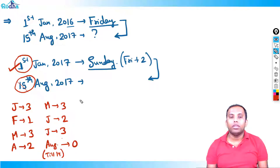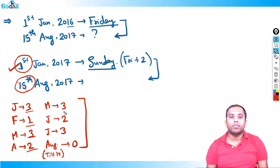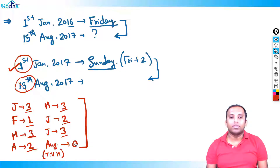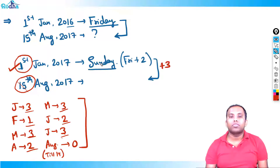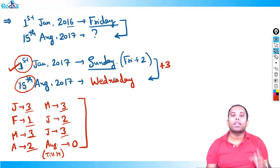Simply calculated on fingers. Total odd days: 3 plus 1 is 4, plus 3 is 7 — 7 means 0. Then 2 plus 3 is 5, plus 2 is 7 — 7 means 0 again. July is 3, plus 0 is 3. So total 3 odd days. Sunday plus 3 is Wednesday. So 15th August 2017 was Wednesday.